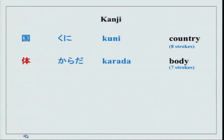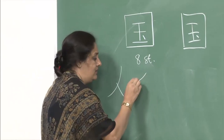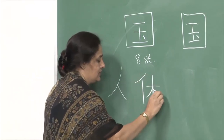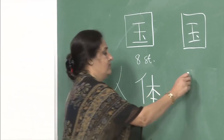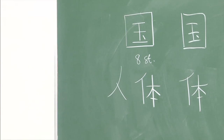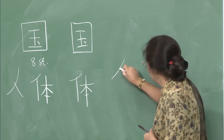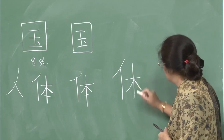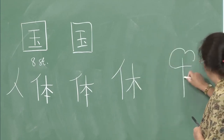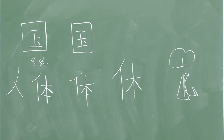Then we have karada — body. This is the character for person (hito). Karada: 1, 2, 3, 4, 5, 6, and 7 — it is a 7-stroke character. We also have yasumi, which is very similar. Generally we make a mistake with yasumi and karada. Yasumi is hito (person) plus ki (tree) — a person sitting under a tree and relaxing. It is a 6-stroke character.